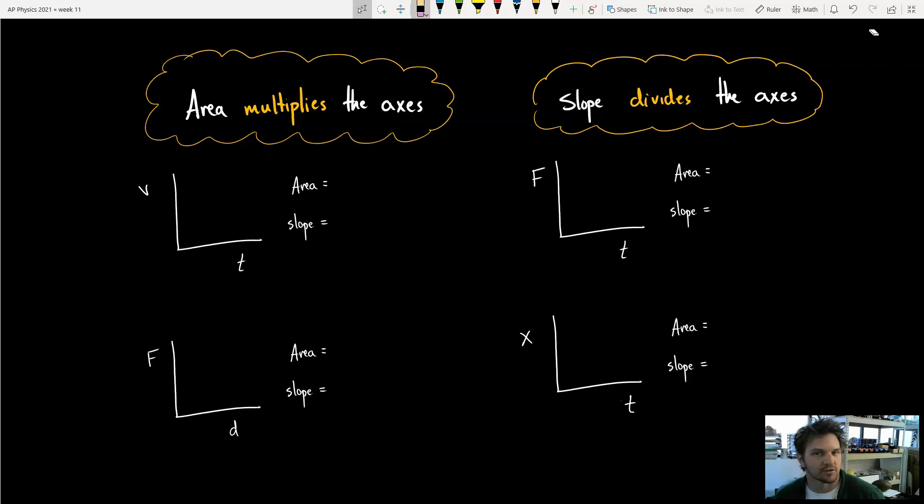First, I want to talk about just graphs. Remember, graphs are really useful to us on AP Physics 1. They love to have graphs show up and have us figure things out from them. Remember, there's always three things you want to look for when you're given a graph.